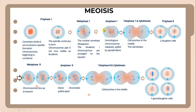From metaphase one, it moves to anaphase one, where the homologous chromosomes separate, pulled by the spindle fibres. When it moves to telophase and cytokinesis, the cell pinches in the middle, indicating that the cells divide. During prophase two, there is the establishment of two daughter cells.